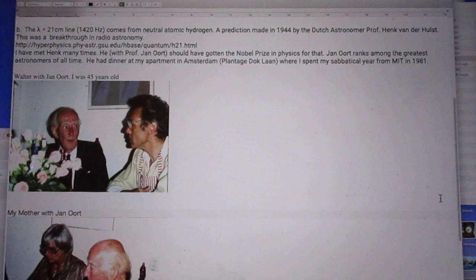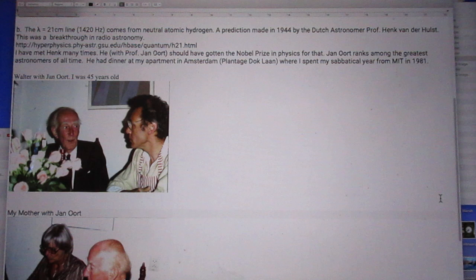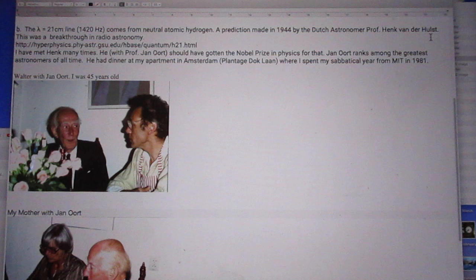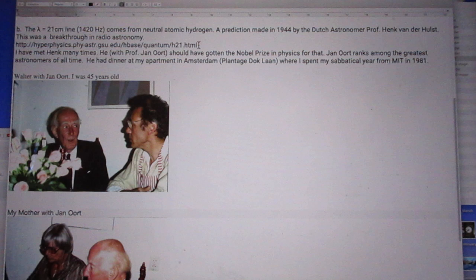Question two is what is so important about lambda equals 21 centimeters, which is a frequency of 1420 hertz. It comes from neutral atomic hydrogen. It was a prediction made in 1944 by the Dutch astronomer Professor Henk van de Hulst. This was a breakthrough in radio astronomy. If you look at this website, you will get all the background of this remarkable 21 centimeter line.